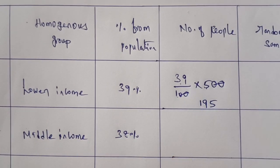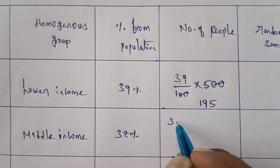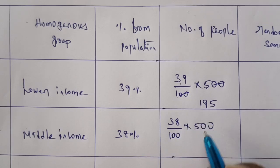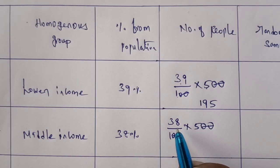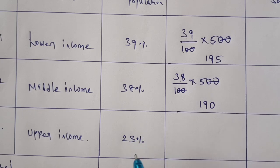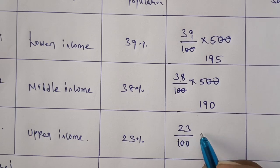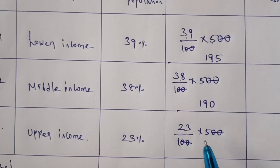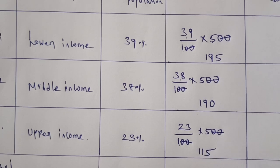For middle income, the percentage is 38/100 into the population size of 500, so 38 × 5 = 190. For upper income, the percentage is 23%, so 23/100 into population size 500 gives 23 × 5 = 115.